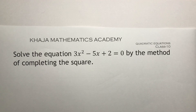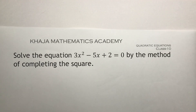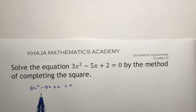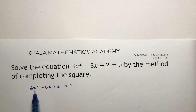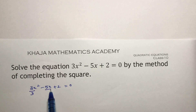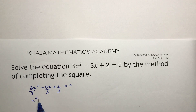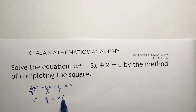Solve the equation 3x² minus 5x plus 2 equals 0 by method of completing the square. So the first step here is to make it x² — divide everything by 3. You will get x² minus 5/3 x plus 2/3 equals 0.